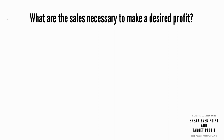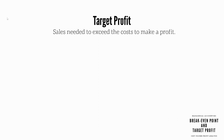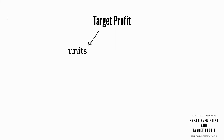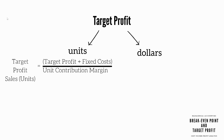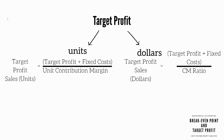What are the sales necessary to make a desired profit? This is where target profit comes into play. Target profit is the sales needed to exceed the cost to make a profit. This can be expressed in units or dollars. The target profit in sales units is determined by taking target profit plus fixed costs divided by unit contribution margin. The target profit in sales dollars is determined by taking target profit plus fixed costs divided by contribution margin ratio.